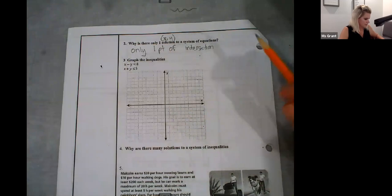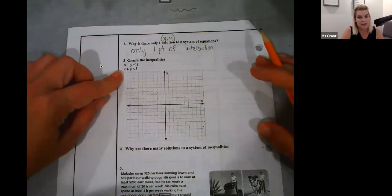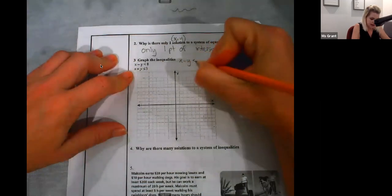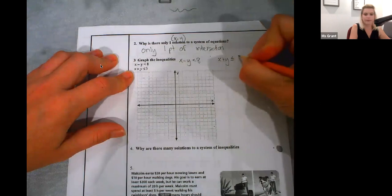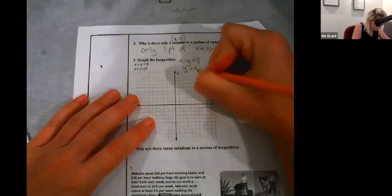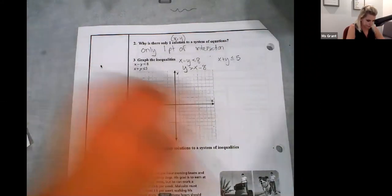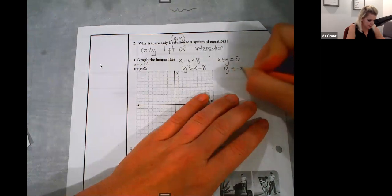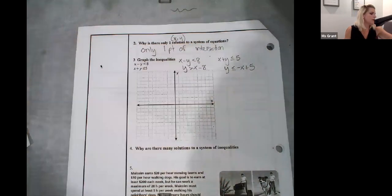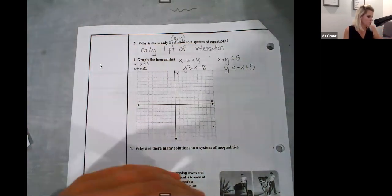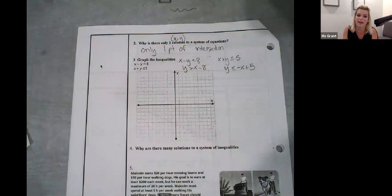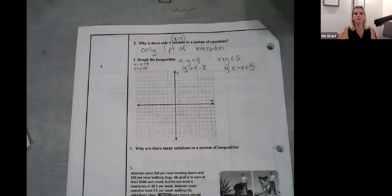Next, graph the inequalities. We need to change these to Y equals MX plus B. It would be a lot easier in this case with the shading. So, X minus Y is less than 8. X plus Y is less than or equal to 5. Change them to Y equals MX plus B. This should be easy for you by now. Y is greater than 1X minus 8. Y is less than or equal to negative X plus 5. Whenever you need to pause the video, do it. If you need to go back and look at something to review, do it. That's one of the benefits of actually seeing it online.